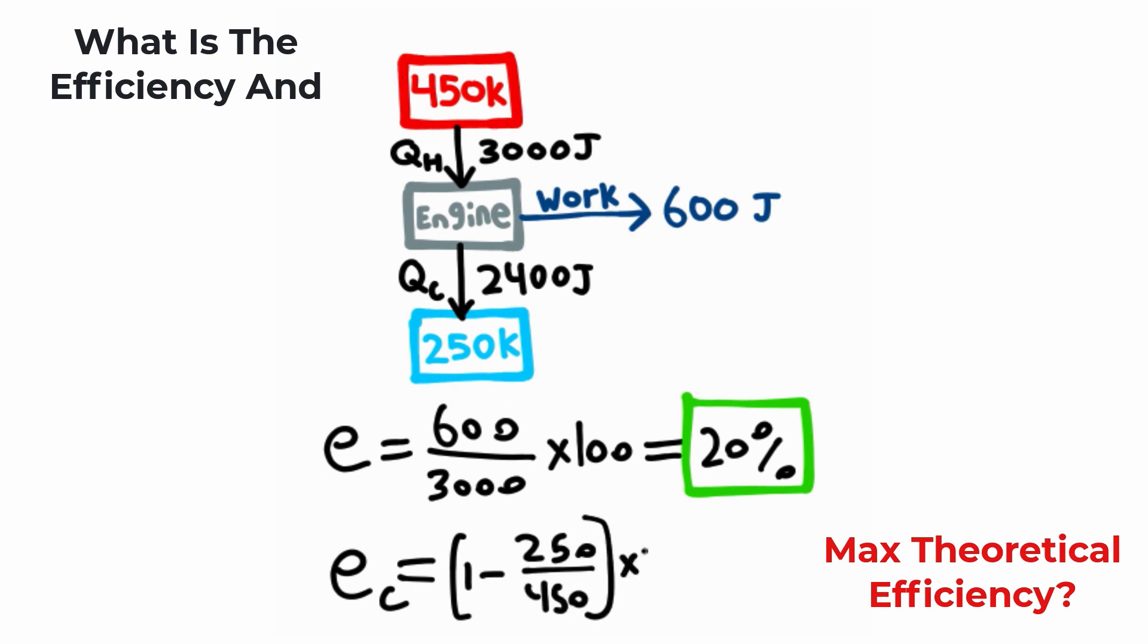Now, I'm going to multiply this by 100%, and this will give me the theoretical maximum efficiency, which you should get about 44% as your answer. Notice comparing the theoretical efficiency, it's larger than the real efficiency. But that actually makes sense, since this is the theoretical maximum efficiency, and this is the actual efficiency of the heat engine.